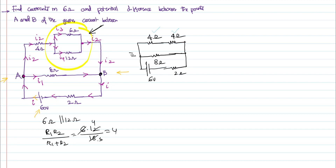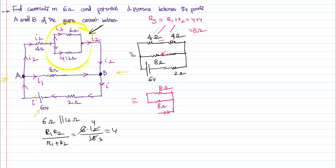Looking carefully at the simplified circuit, this 4 ohms and the other 4 ohms are in series. For resistors in series, R_series equals R1 plus R2, which is 4 plus 4 equals 8 ohms. Drawing the equivalent circuit again, instead of the two 4 ohm resistors we have 8 ohms. These 8 ohms are in parallel with another 8 ohms, and at the bottom there is a 2 ohms resistor and a 60 volt supply.